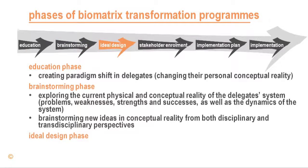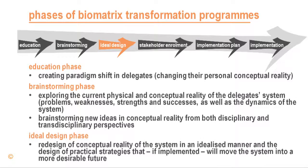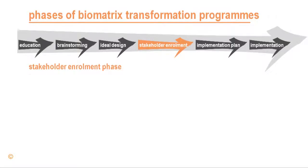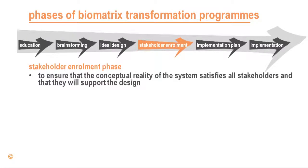The ideal design phase is concerned with the redesign of the conceptual reality of the system in an idealized manner, and then the design of practical strategies that, if implemented, will move the system into a more desirable future. After the program delegates have created a draft design, they will facilitate increasing numbers of stakeholders to participate in design iterations, to ensure that the conceptual reality of the system satisfies all stakeholders and incorporates their specific needs and perspectives, so that stakeholders are likely to support the design.